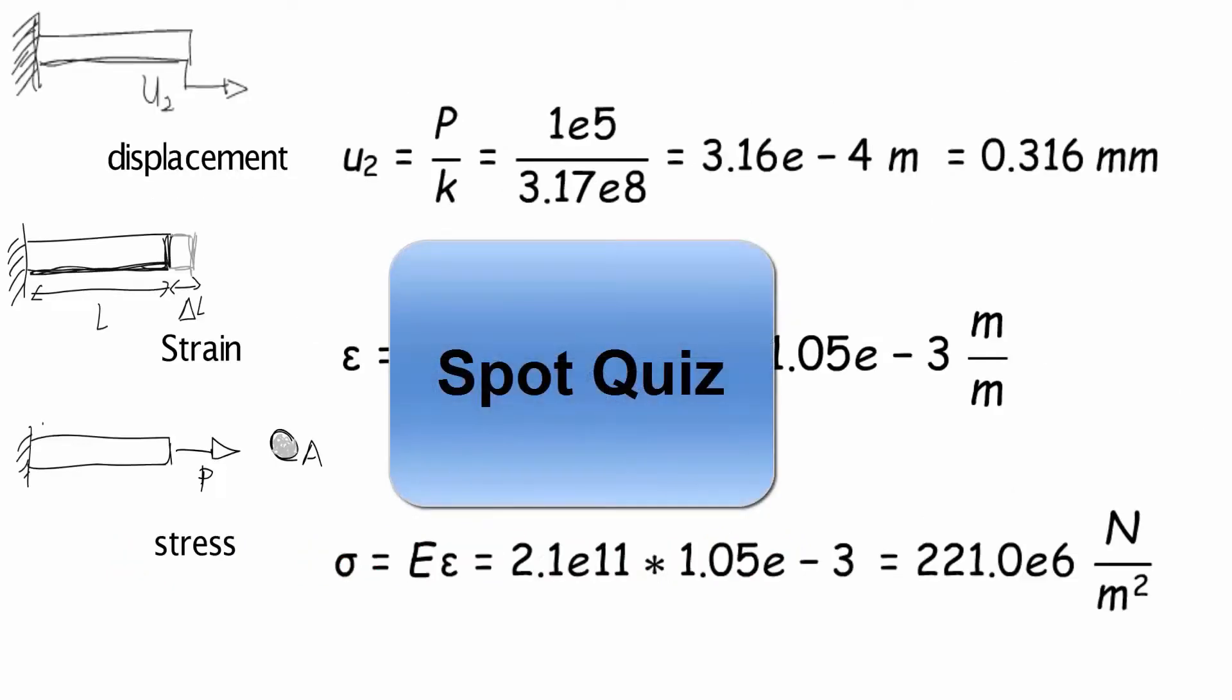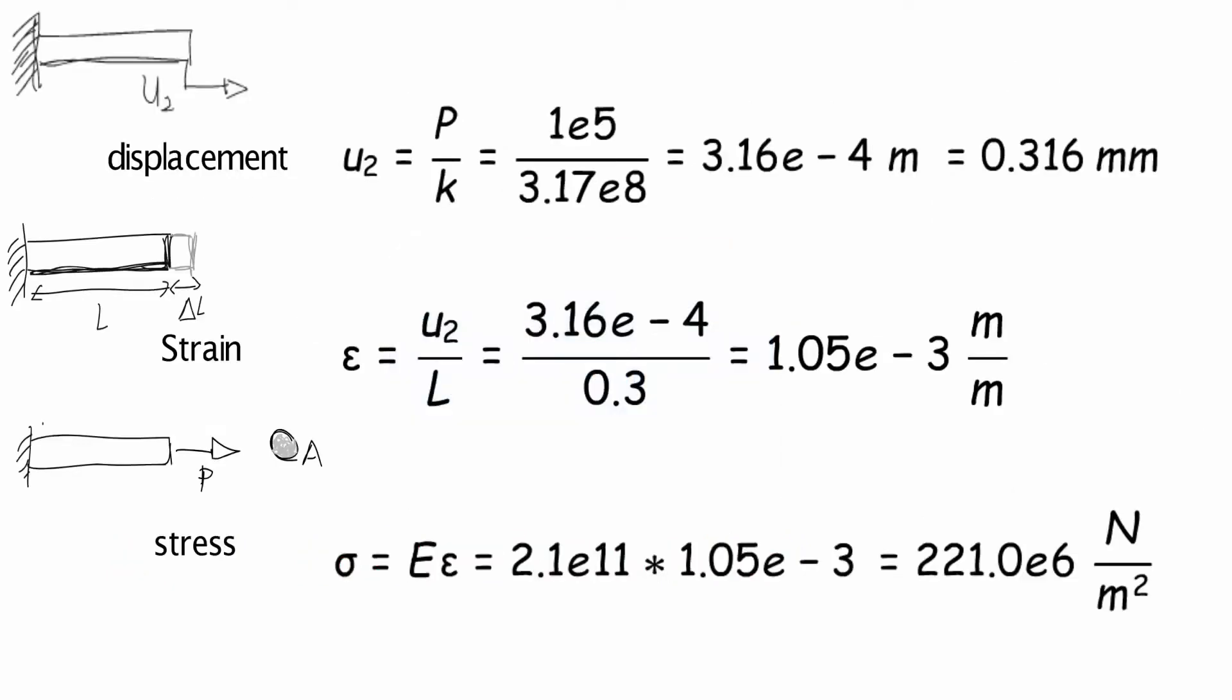And now we have our usual spot quiz. So the first question is, does a deflection of 0.316 millimeters seem like a reasonable deflection in a rod this size? Or perhaps it should be 0.316e to the minus 3 or 0.316 meters? Is that more likely?